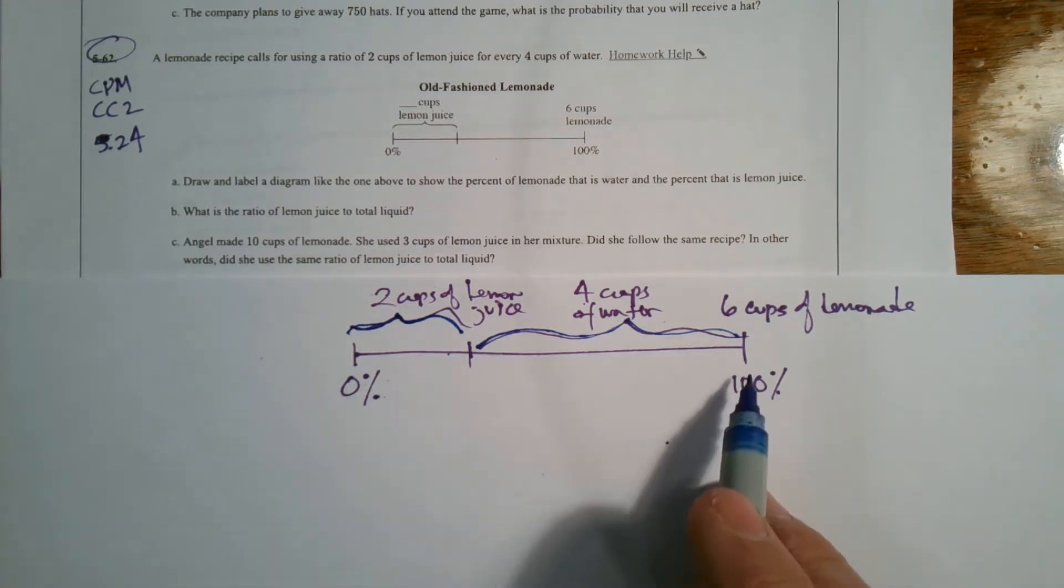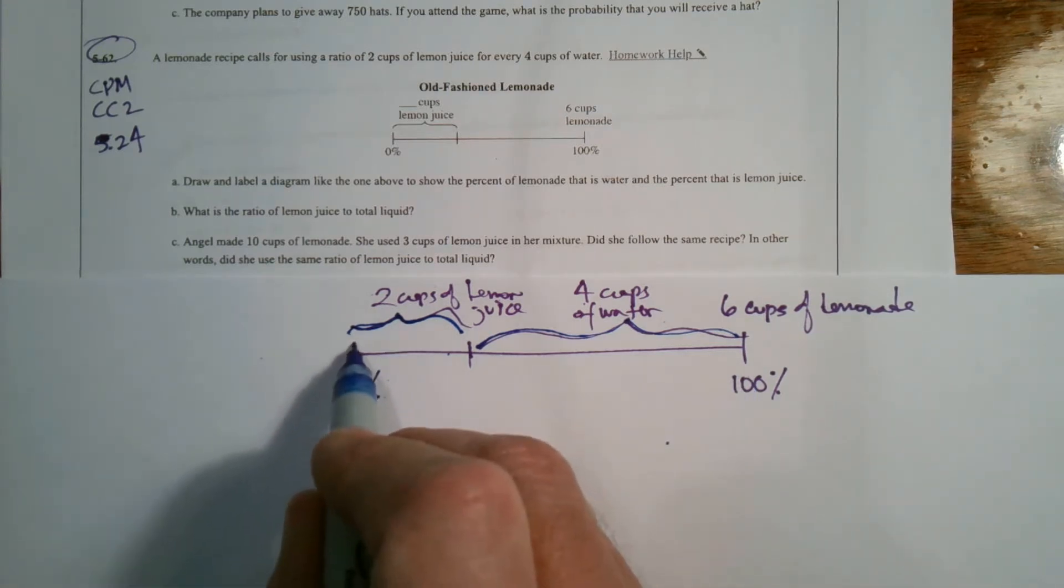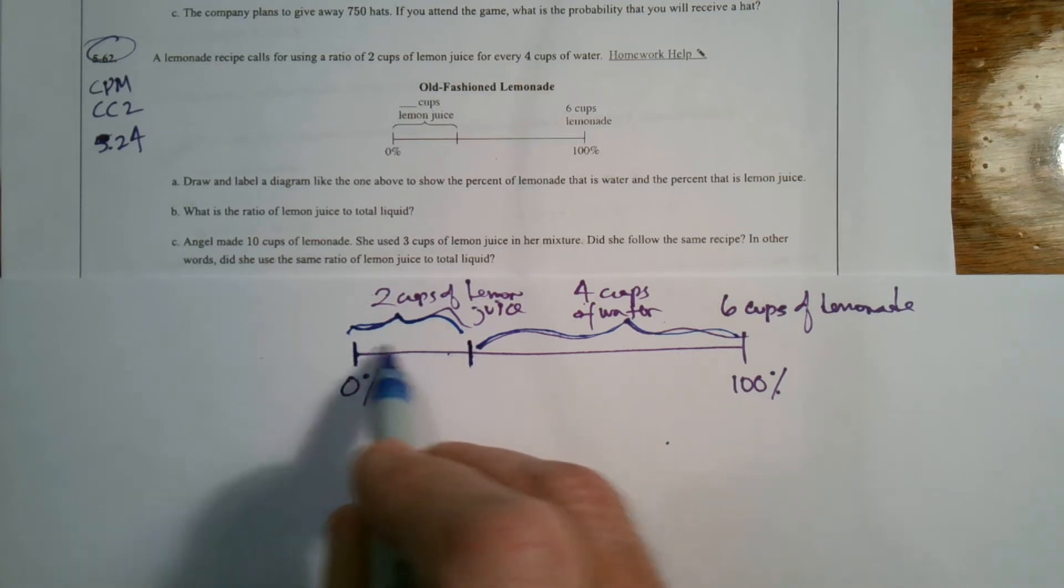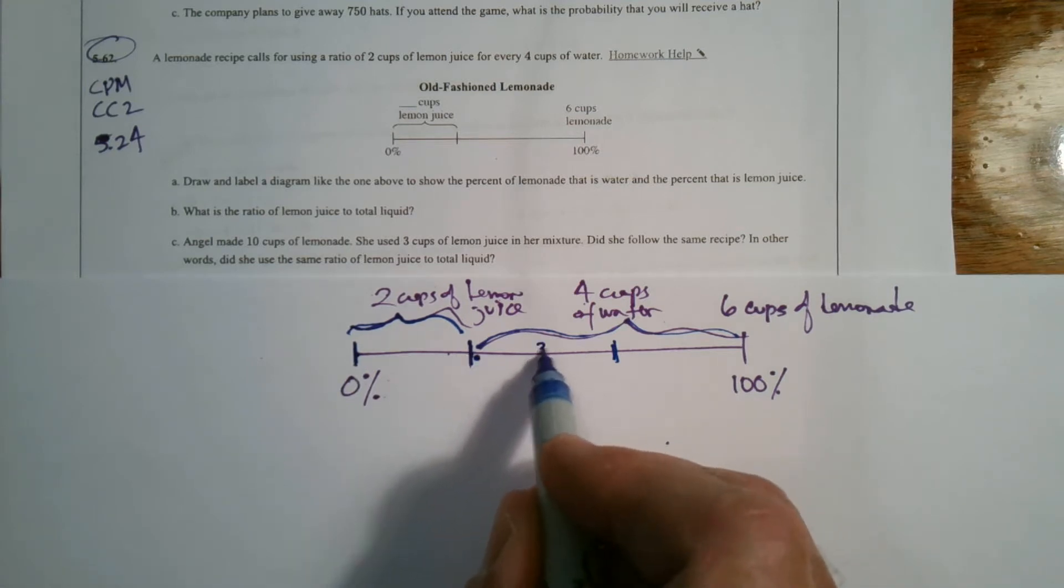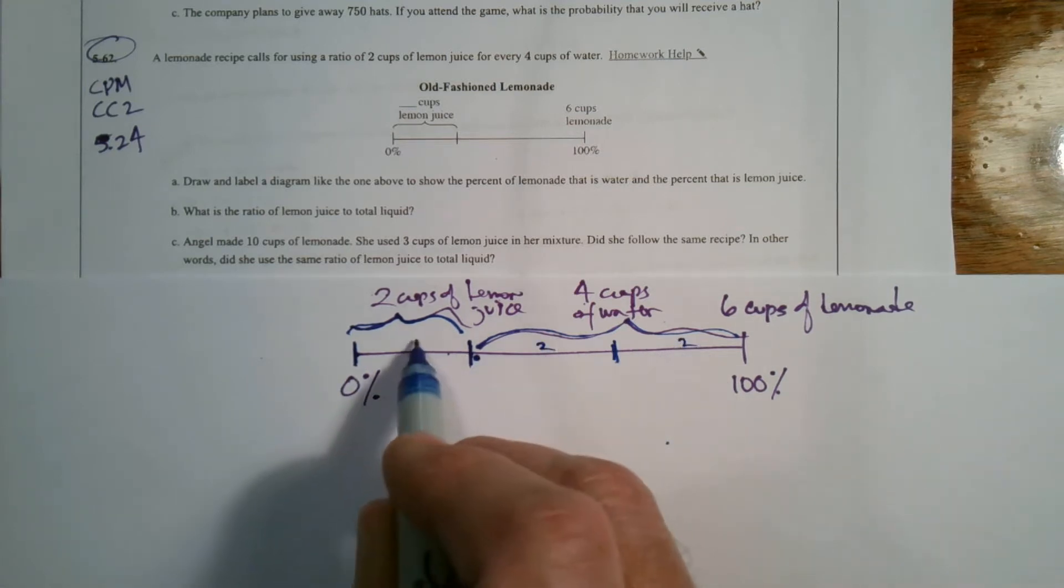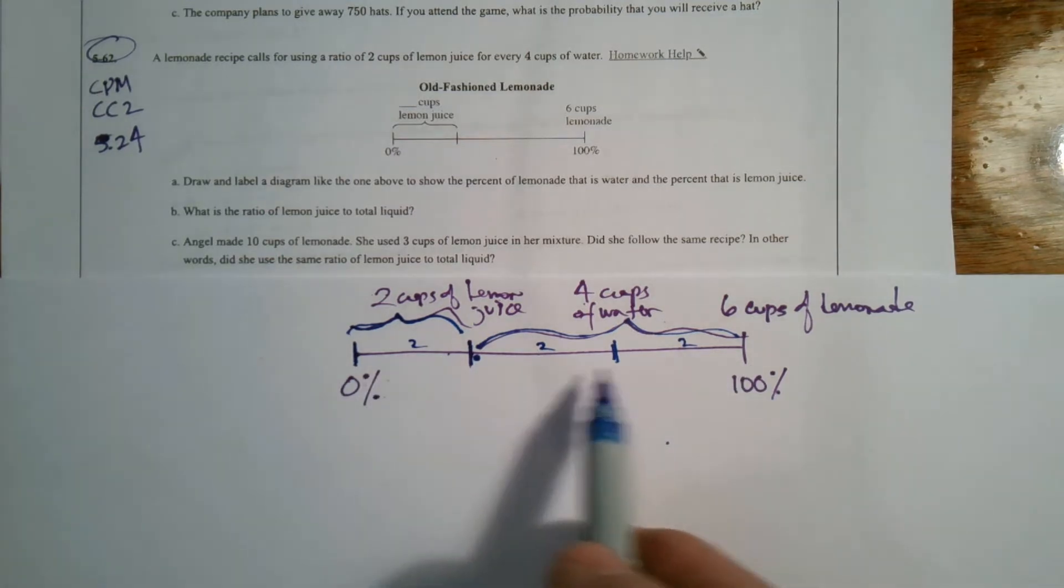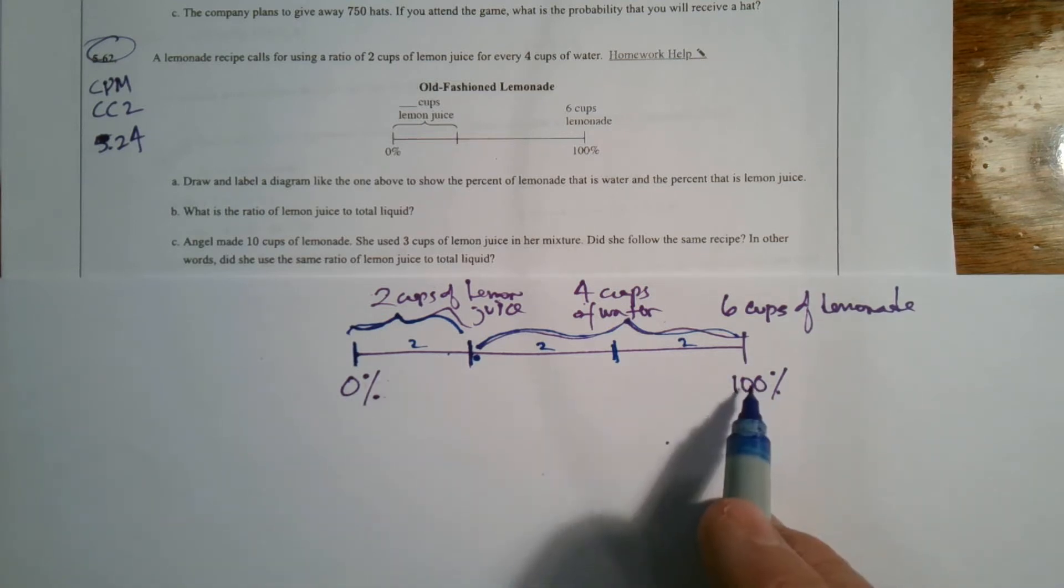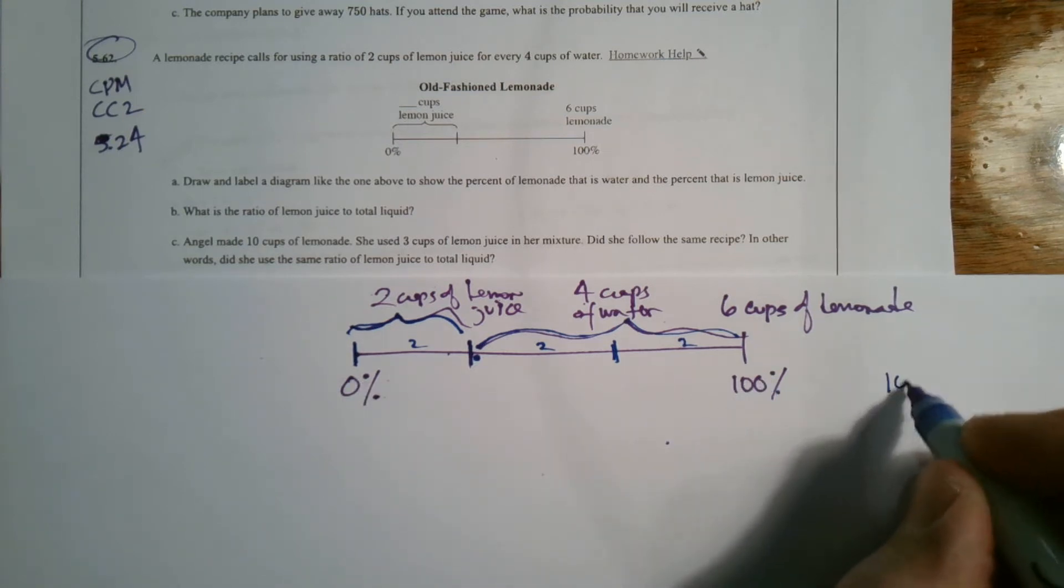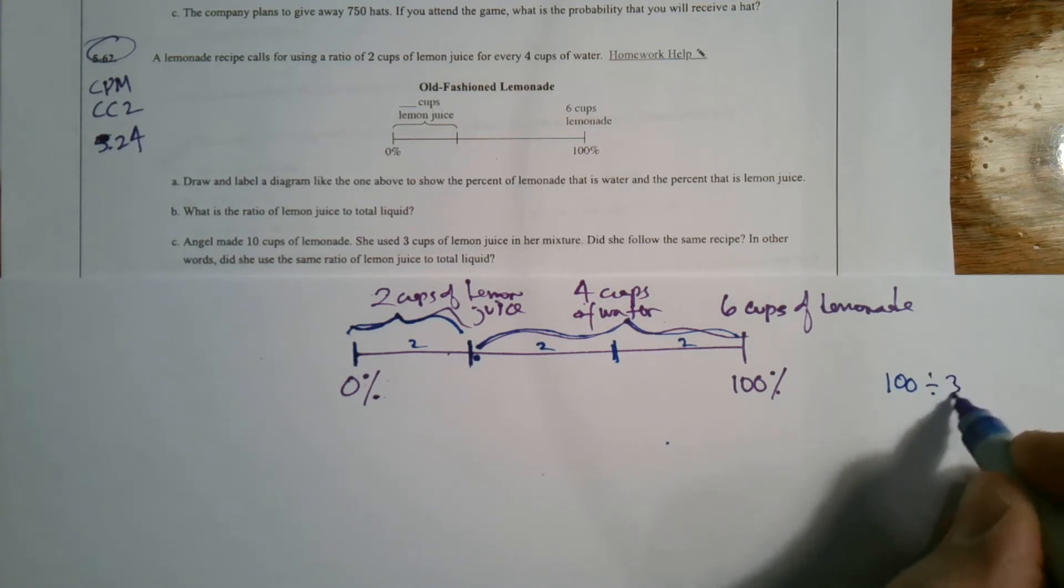So you've got the two cups of lemon juice from here to here, and the four cups of water from there to there. So let's talk about our percentages. I can cut this equally. If I've got two there, I can cut this in half and get another two here. So each of these sections is two. That's three equal sections. So I can look at my percentages and cut that by thirds. So take 100% and divide it by three.